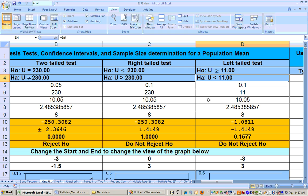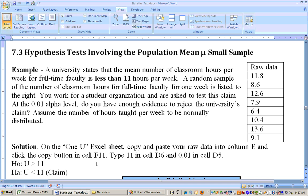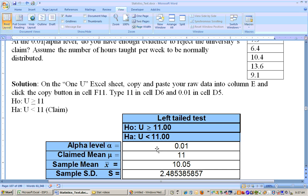So we just cannot say this right here. We are unable to show that the average hours taught is significantly less. The average hours taught by all the faculty members at this college is significantly less than 11 hours per week. We just can't show that, even though the sample mean was 10.05. And so there's not enough evidence to support that claim right there. Okay, we can't show that claim. We're unable to show that.